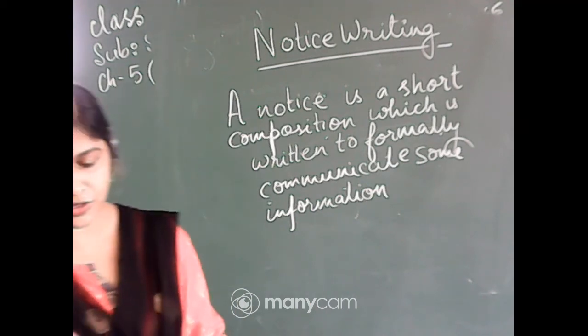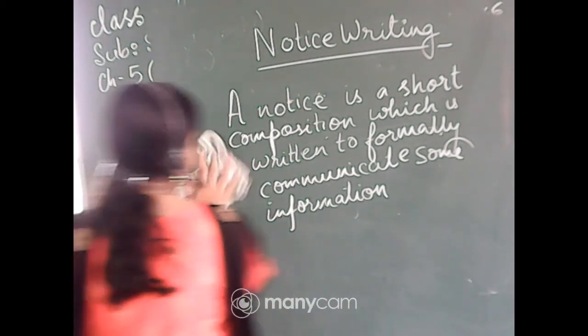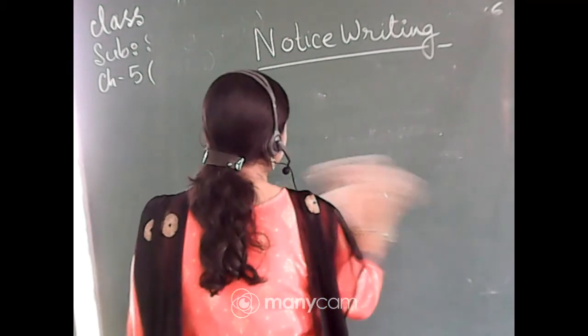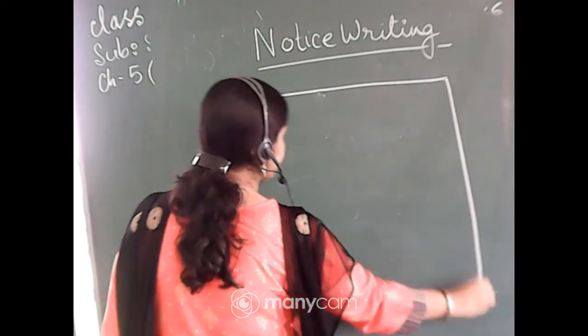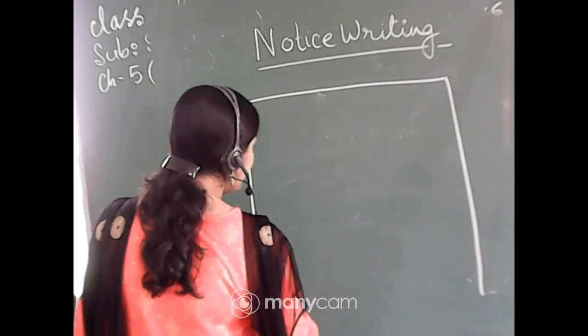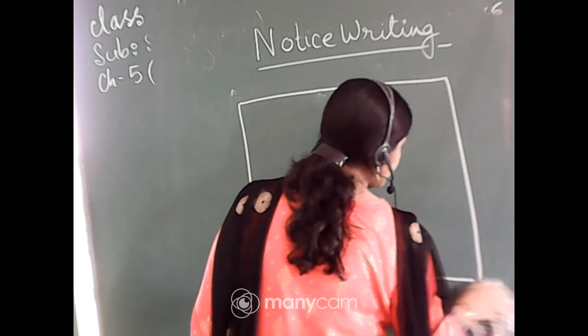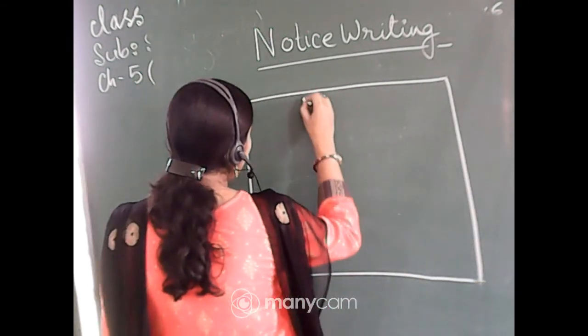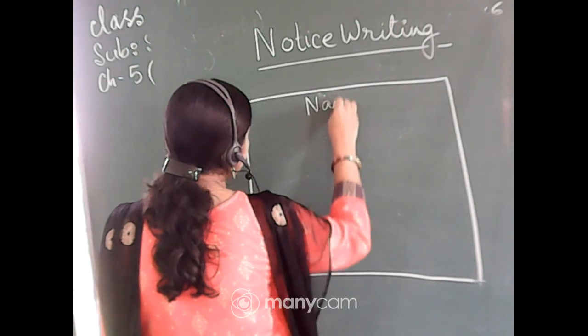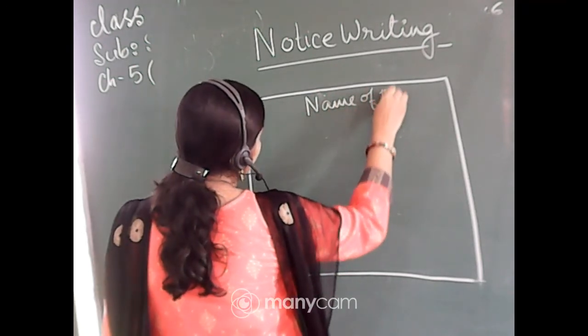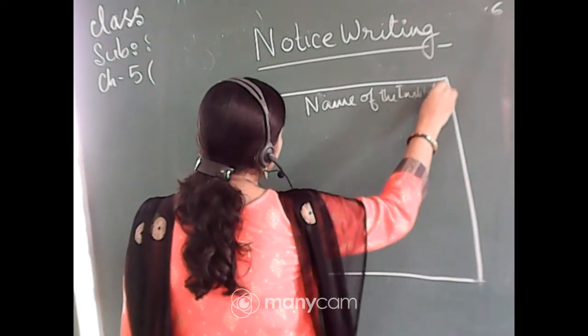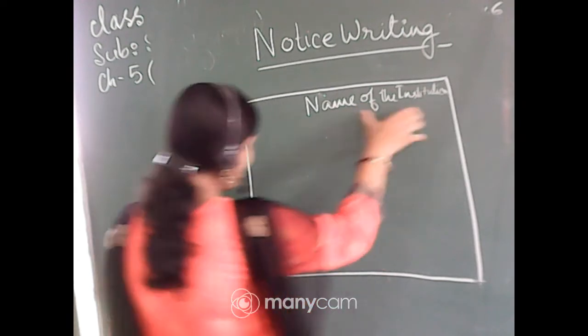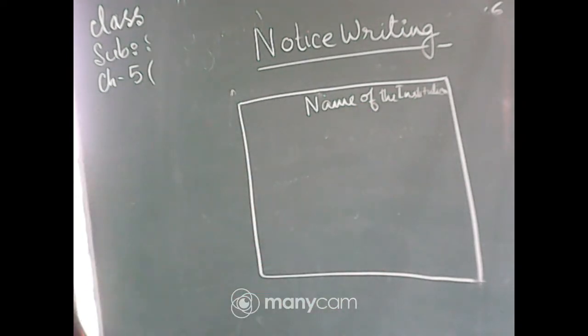A notice has to be written in a box. A box has to be drawn after writing the notice. On the top you will write the name of the institution. It can be the name of your school if you are representing your school. Say Bird One Model School, you will write it on the top. Then comes the word notice.